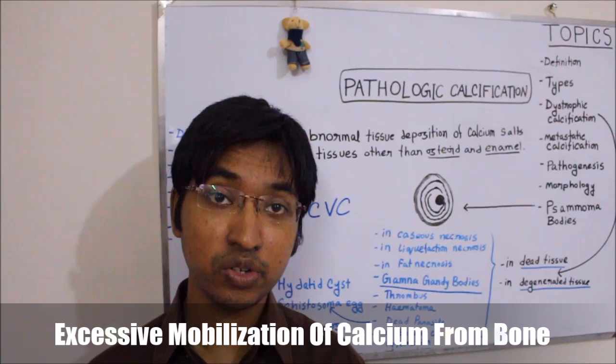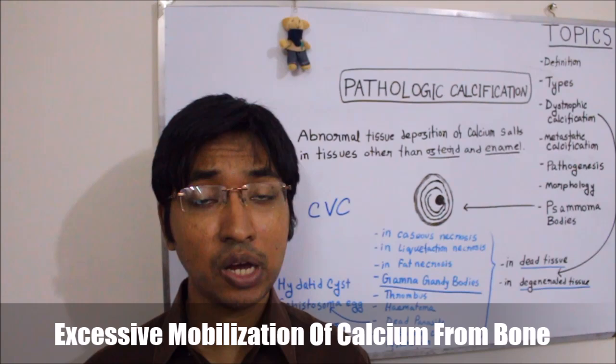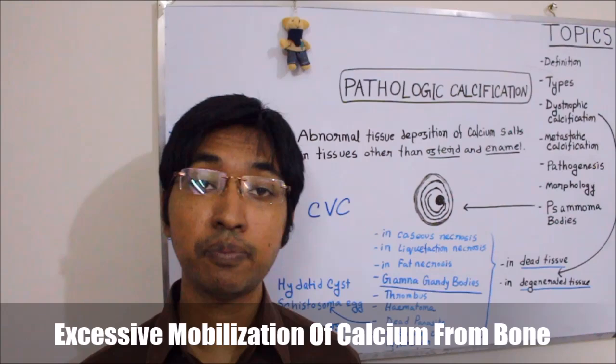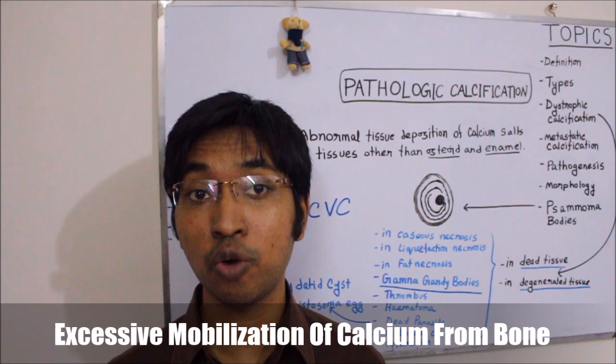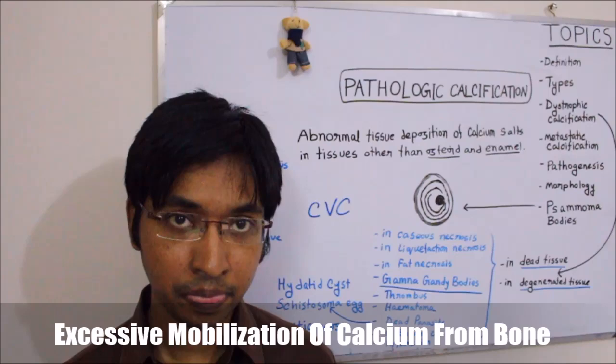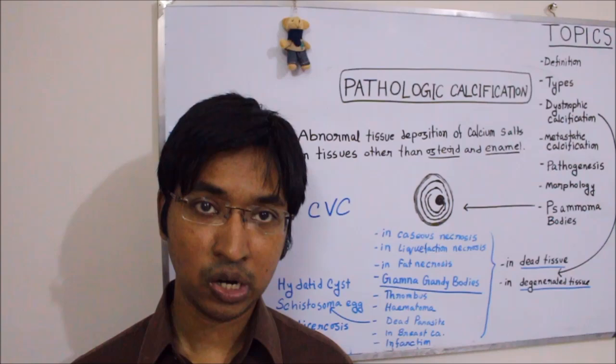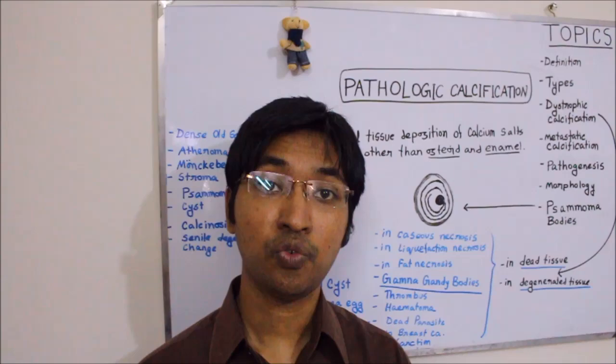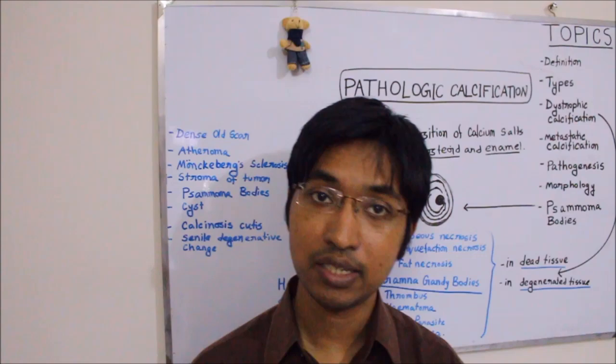Excessive mobilization of calcium from the bone can occur due to a variety of causes. The first cause is hyperparathyroidism — that is, when there is increased parathyroid hormone. Hyperparathyroidism can develop when there are some tumors in the parathyroid gland, such as parathyroid adenoma. Hyperparathyroidism can also develop when there is ectopic parathyroid hormone-like protein secretion from other malignant tissues. Primary causes of hyperparathyroidism include tumors of the parathyroid gland.